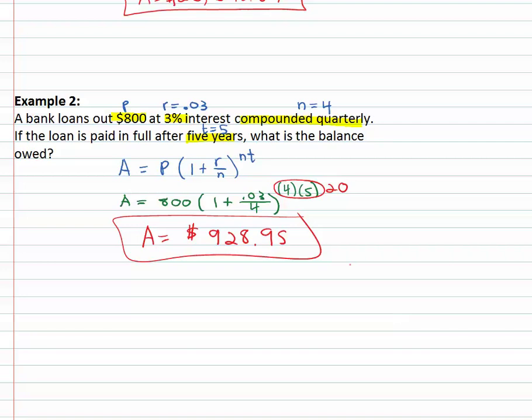So by using the formula, clearly identifying what variables are what from the problem, we can find out how much money is left in the account based on the number of compounds.